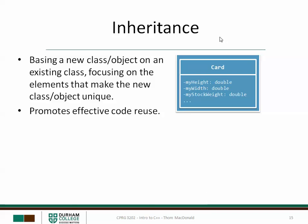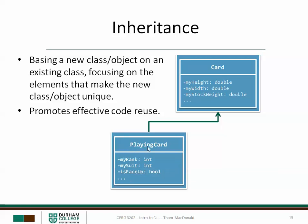Another big idea in object-oriented programming is the concept of inheritance — basing a new class on an existing class, focusing only on those things that make the new class unique. This really promotes effective code reuse. For example, if we created a generic class called Card, a card will have a height and a width, a stock weight, and other attributes and behaviors. Another programmer might take this basic class and extend it to create a PlayingCard class as a child or derived class from Card. We don't have to redefine all of those attributes — we just say it's a card that also has a rank, a suit, a face-up property, and whatever else a playing card should have.